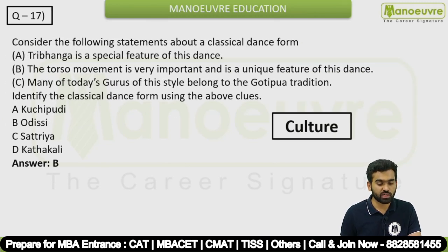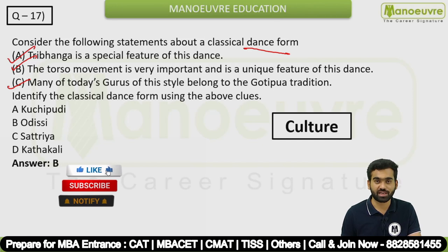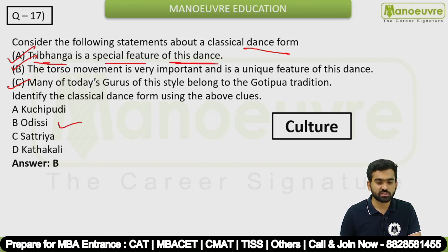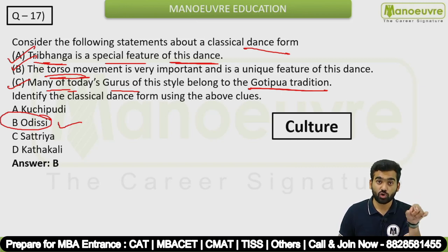Question 17: Consider statements about a classical dance form. Statement A: Tribhanga is a special feature of this dance. Statement B: Torso movement is very important and a unique feature. Statement C: Many of today's gurus belong to the Gotipua tradition. The dance being described is Odissi. This is a geography and culture-related question.